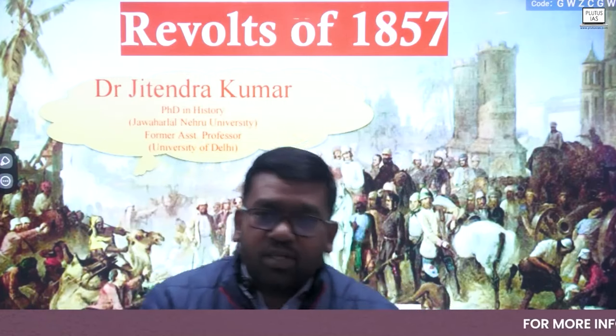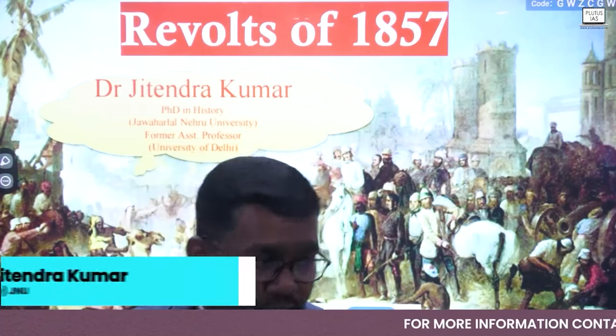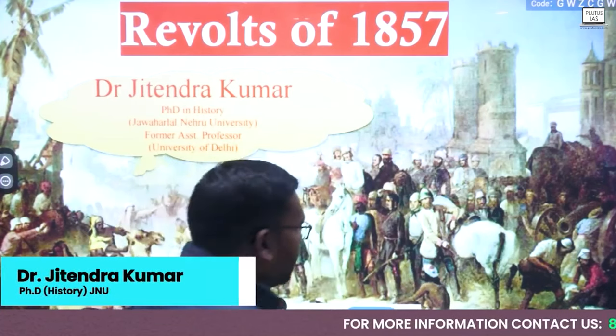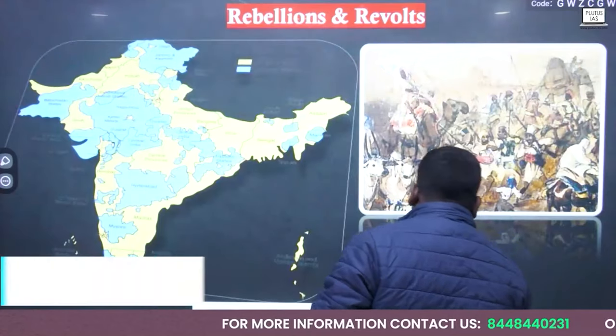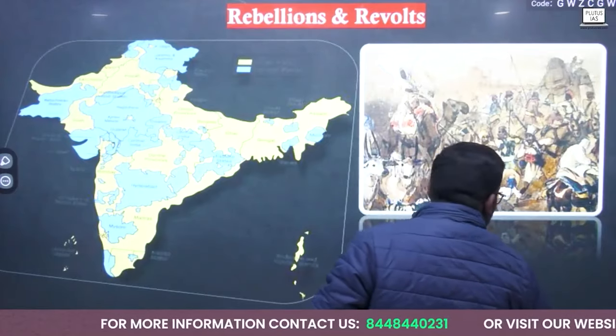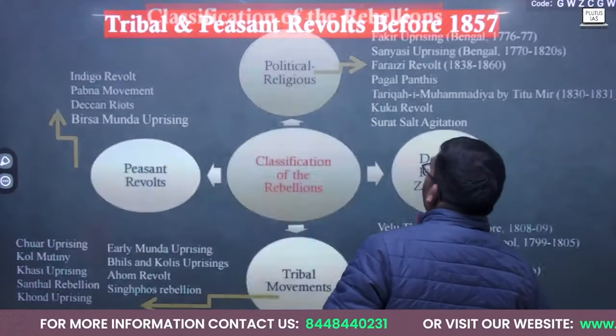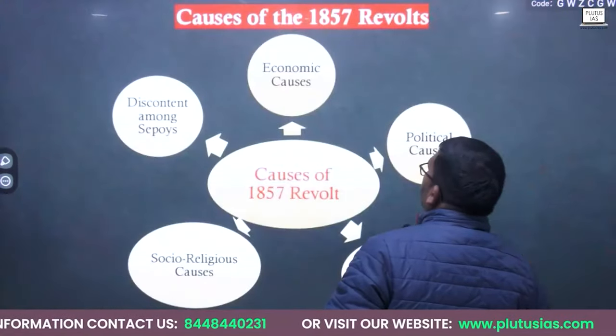In 1857, first of all, let us discuss what are the main causes. So, the first cause is economic causes. Economic causes is the first cause of the revolt.